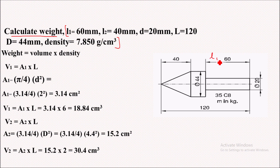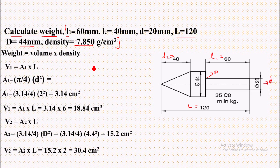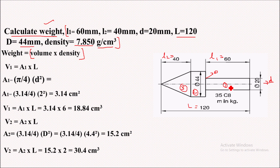The problem definition is: calculate weight if the given data is as follows — small l1 is 60 mm, small l2 is 40 mm, small d is 20 mm (small diameter), capital L is 120 mm (total length), capital D is 44 mm (maximum diameter), and density is 7.850 gram per centimeter cube. Weight is nothing but volume into density, so we'll divide this material into three sections to calculate volume for each.